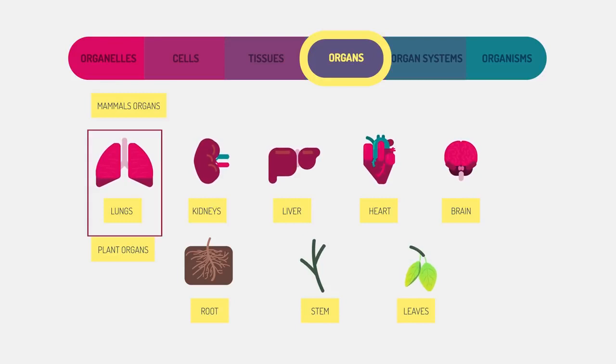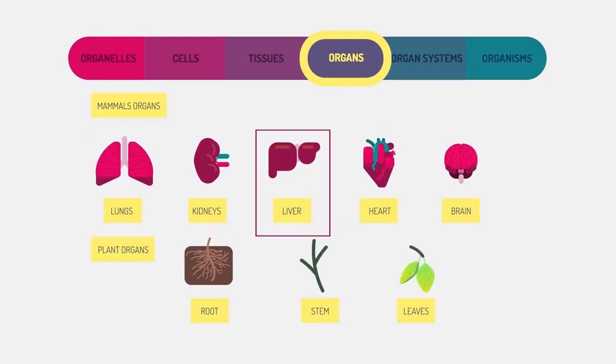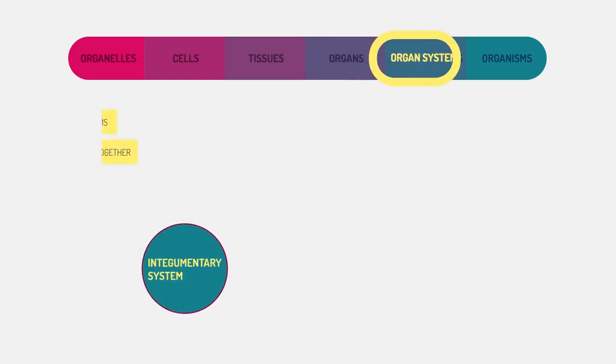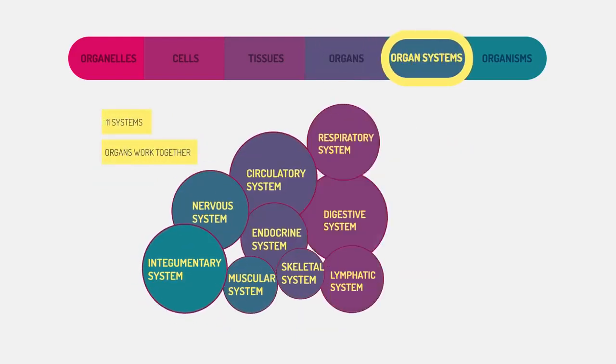These specialized organs work together in organ systems, performing body functions. Organ systems keep the body regulated and in a stable state. The human body has 11 organ systems.